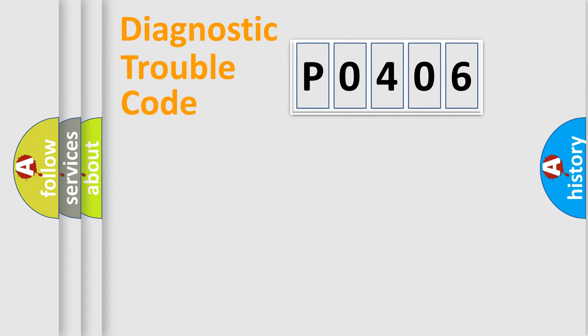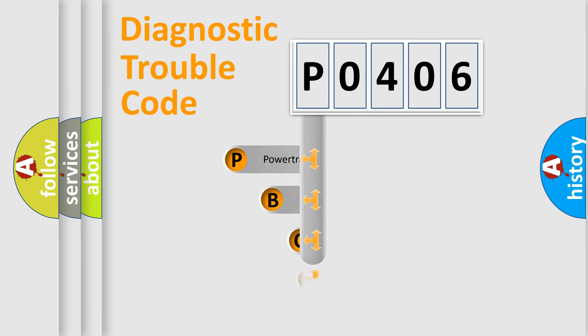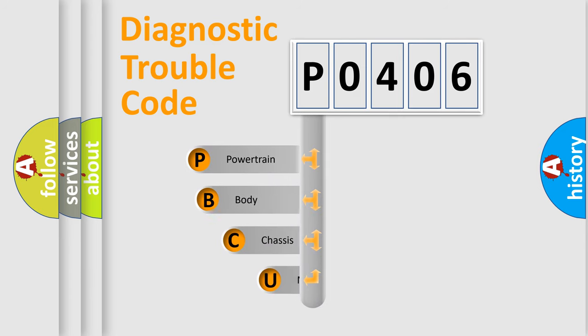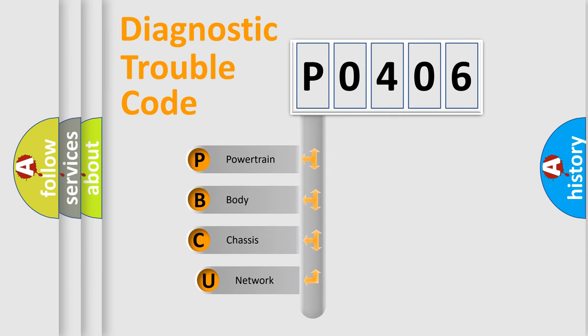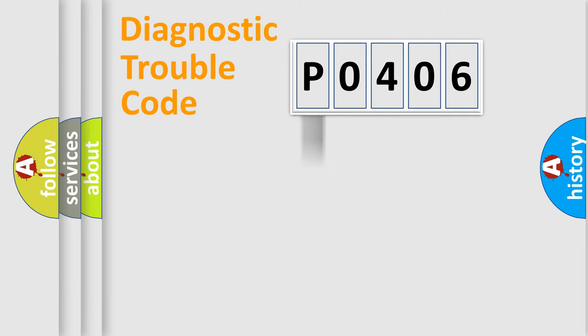Let's do this. First, let's look at the history of diagnostic fault code composition according to the OBD2 protocol, which is unified for all automakers since 2000. We divide the electric system of the automobile into four basic units: Powertrain, Body, Chassis, and Network.